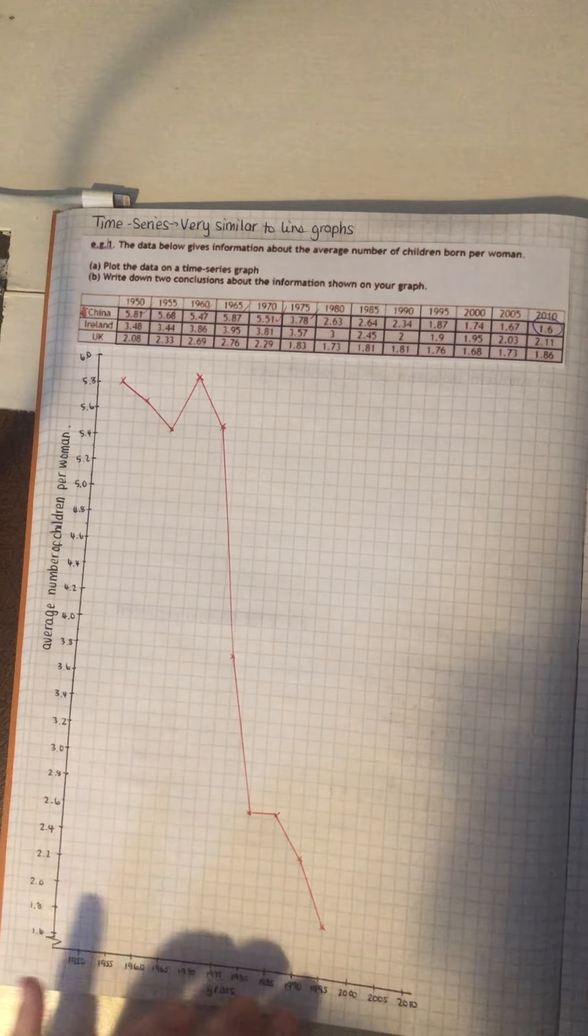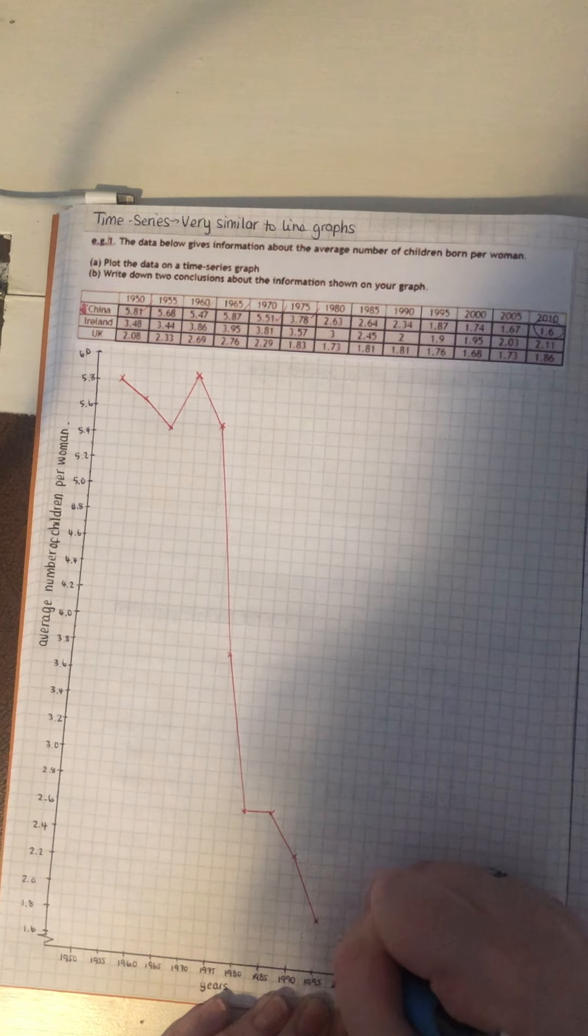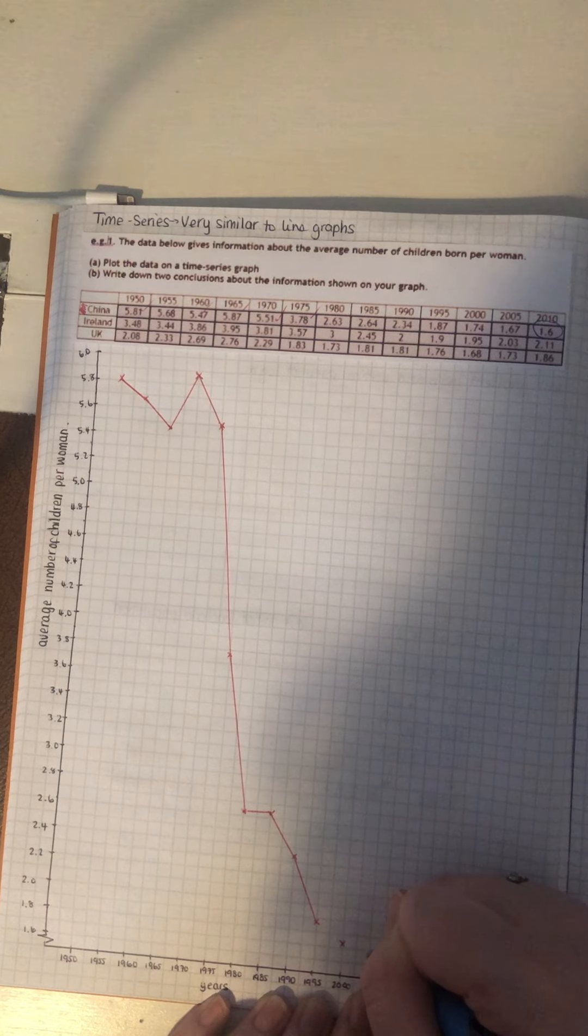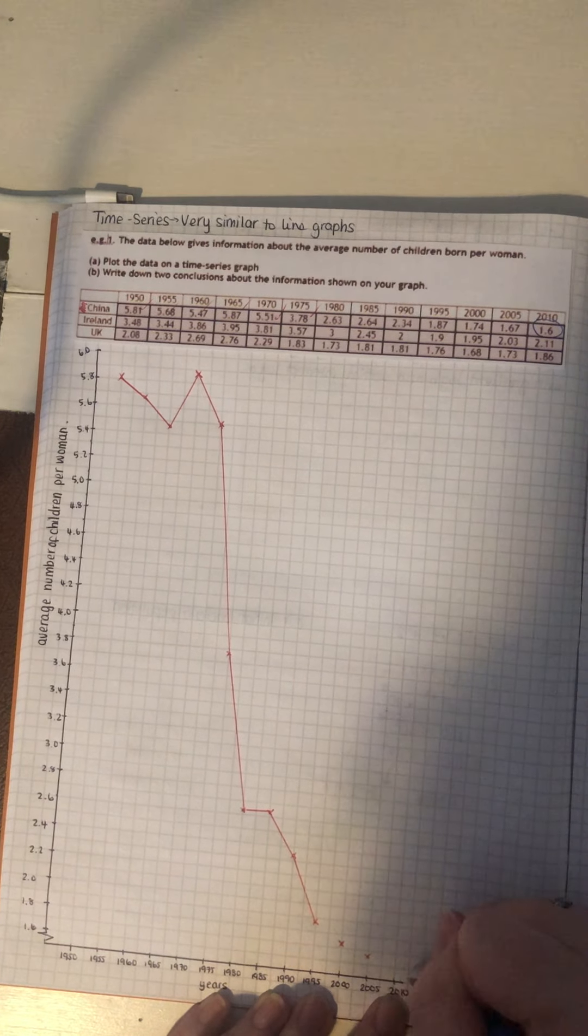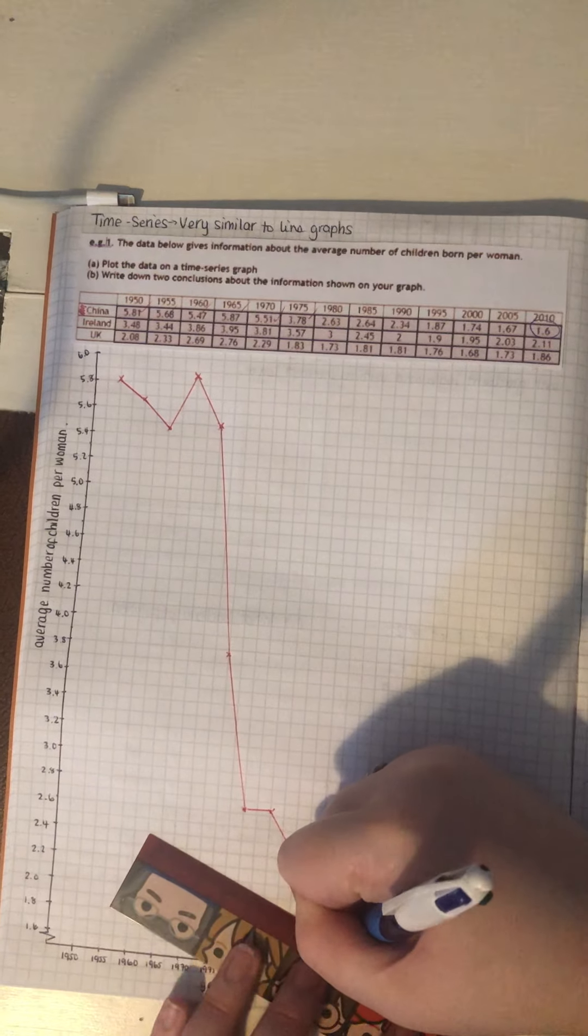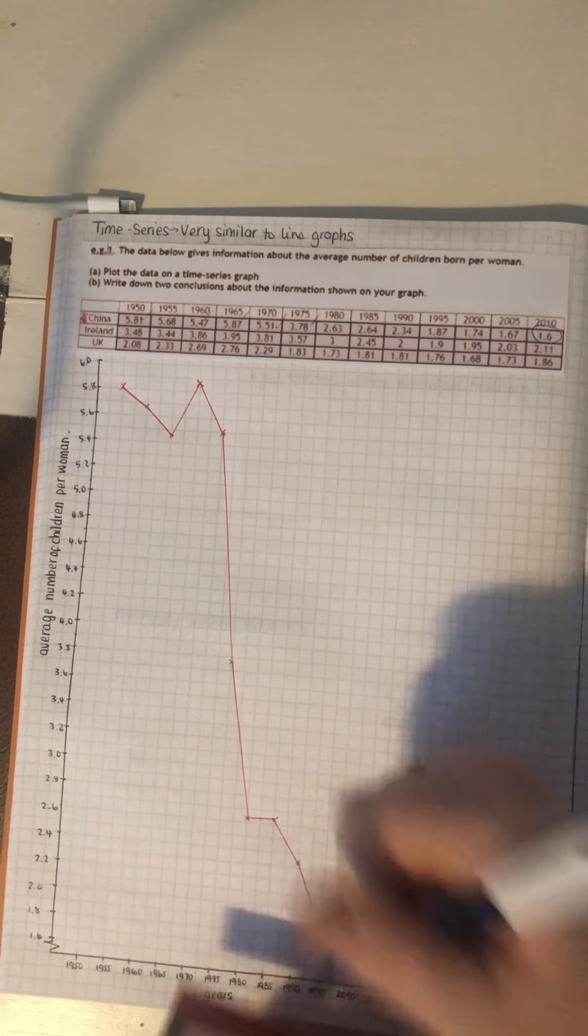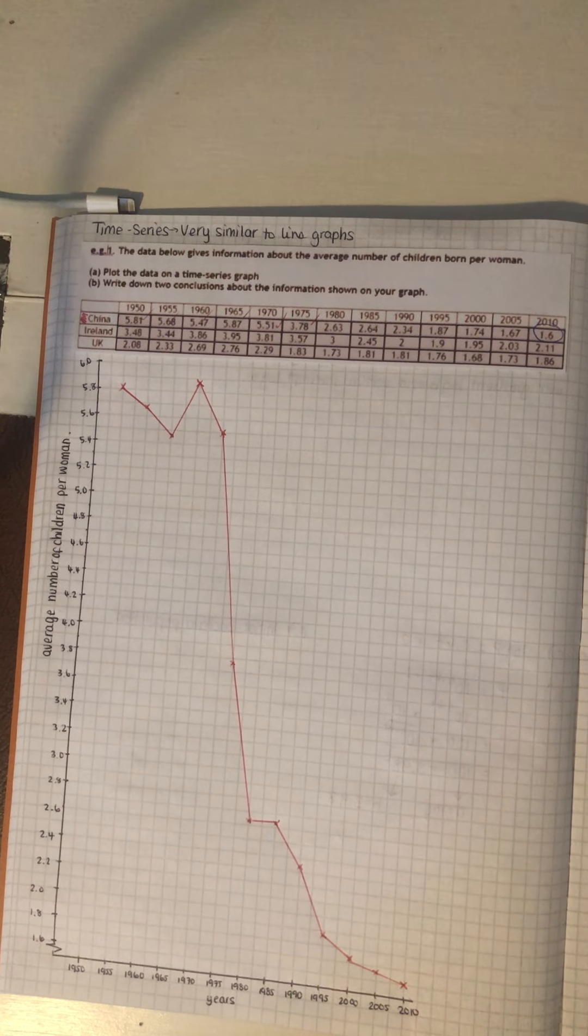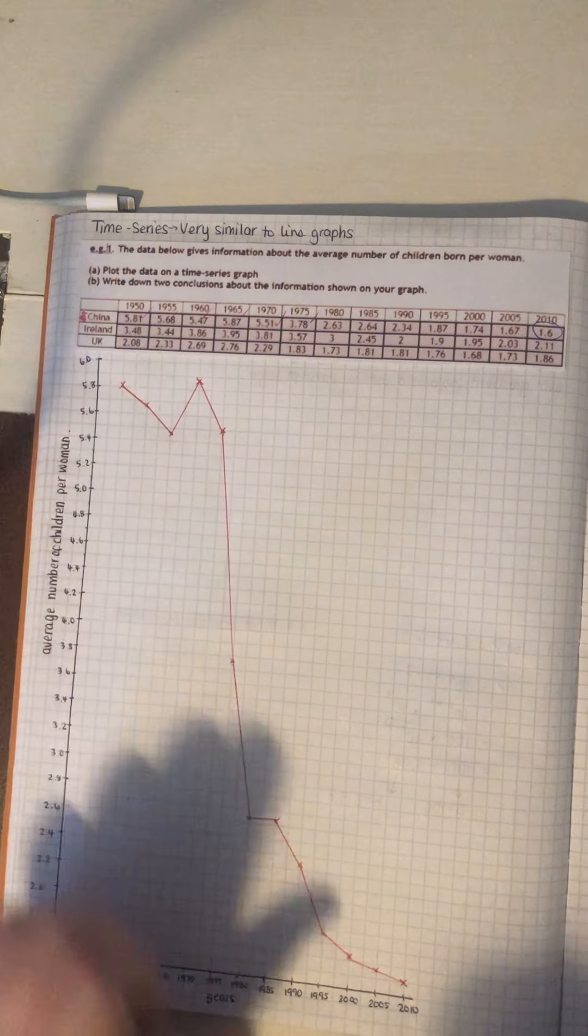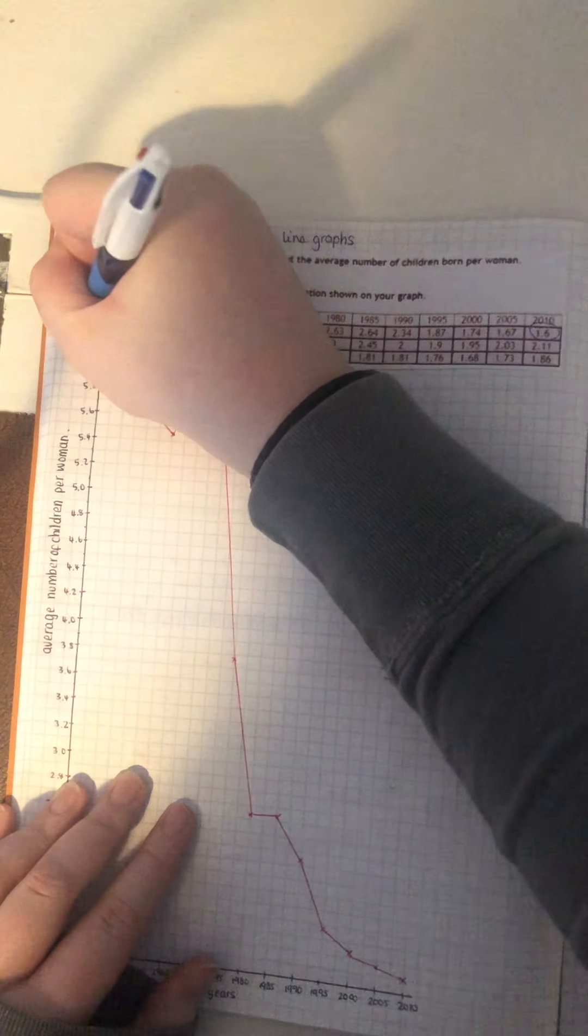And 2000 is 1.74, so about there. 2005 is 1.67. So, about there. And 2010 is 1.6. So, that's the first one done. Now, I am going to put a key at the end. For now, I'm just going to keep coloring in the top bit, so next to the country.